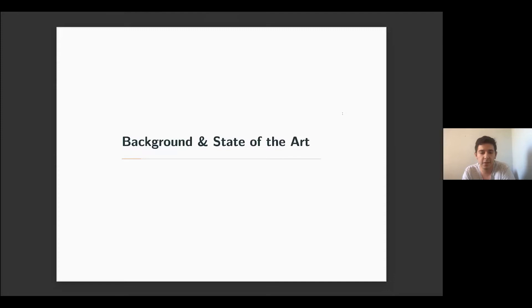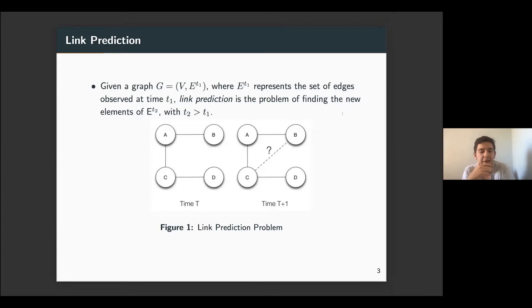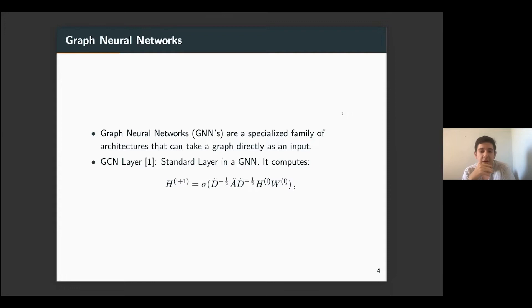I'm going to comment on the background necessary for the method. So for the problem of link prediction, real quick, for a given graph in a particular time state, link prediction refers to a problem of predicting which links are going to be formed on a future state. Graph neural networks are a family of deep learning methods that can take a graph directly as an input. So to achieve this, they use what is called a GCN layers. GCN, there are several proposals on layers, but GCN is a standard. It computes the following propagation that you can see here, where the normalized adjacency matrix is multiplied by the activations of the previous layer and the network weights.